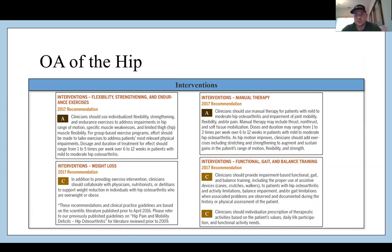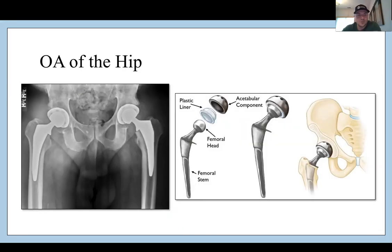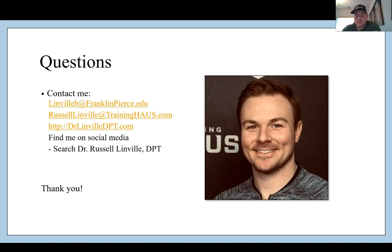Interventions are straight out of the JOSPT clinical practice guideline — pause and review those or the hip OA article. For severe hip OA, a total hip arthroplasty may be indicated, which we'll talk about in the surgical lecture. Thank you all for sitting in — this is probably the longest of the three lectures. Appreciate you, and let's get after it.